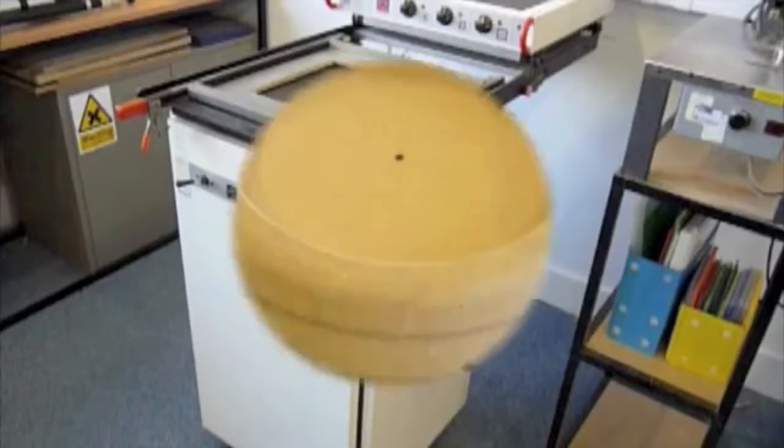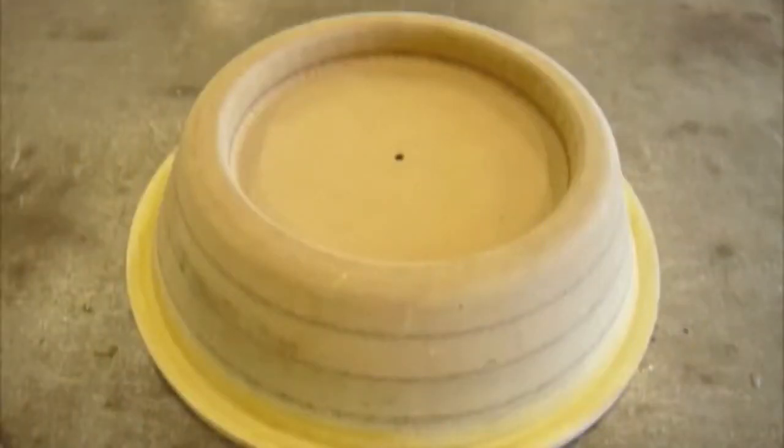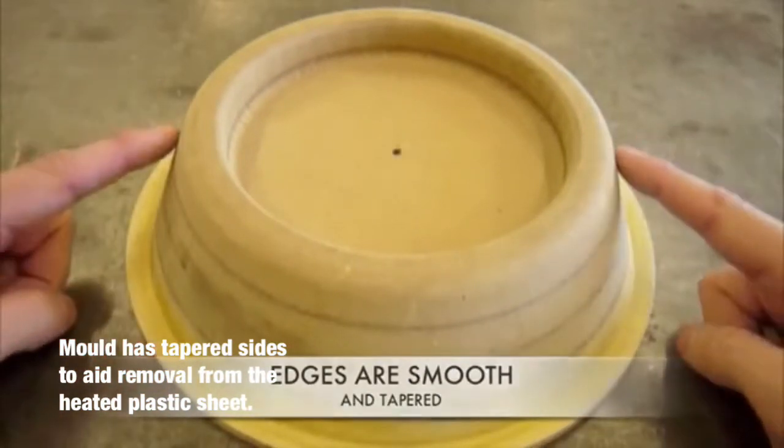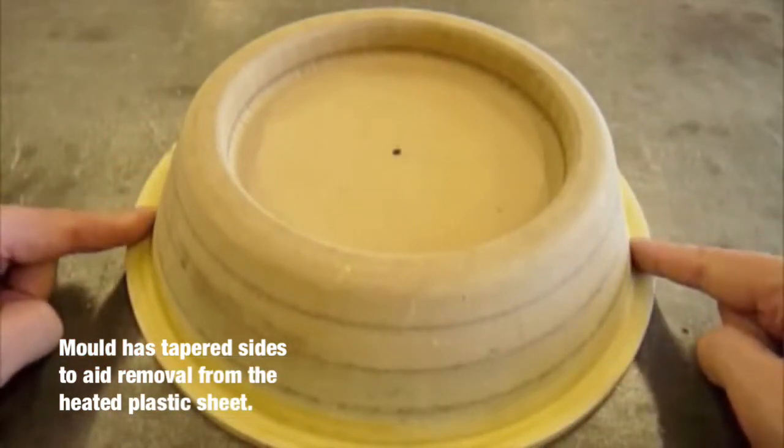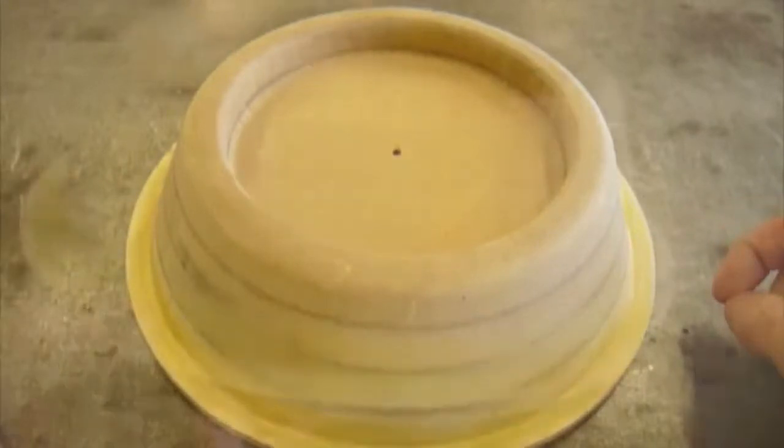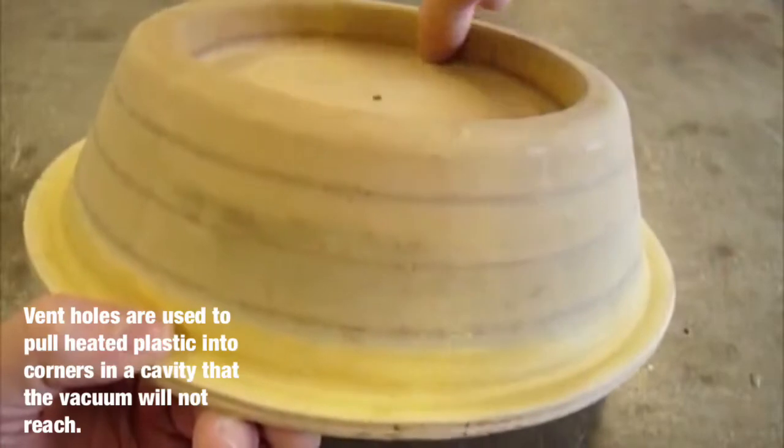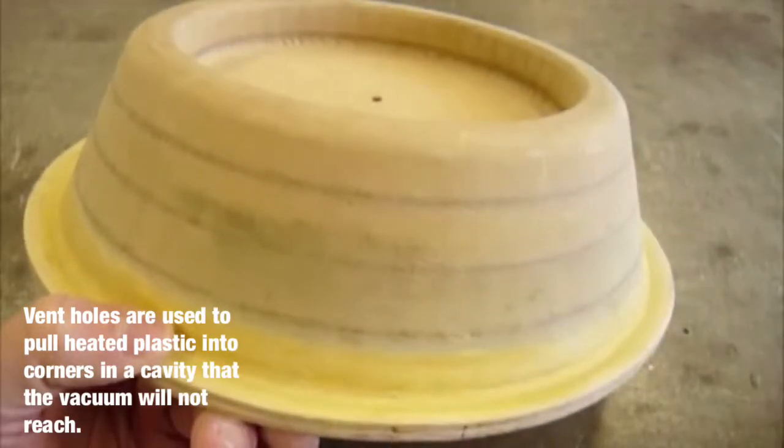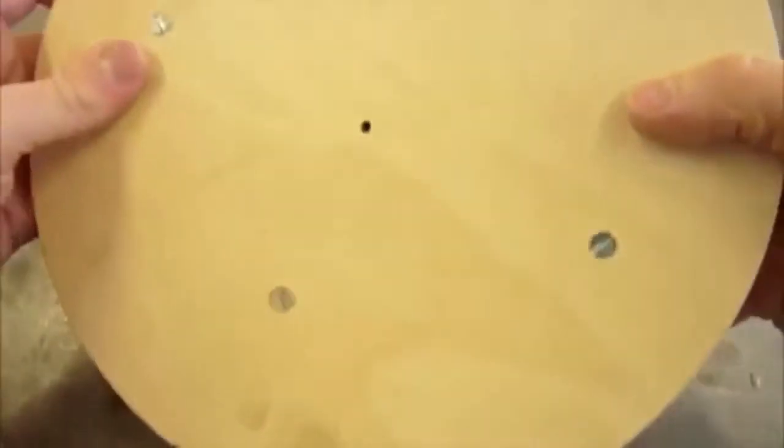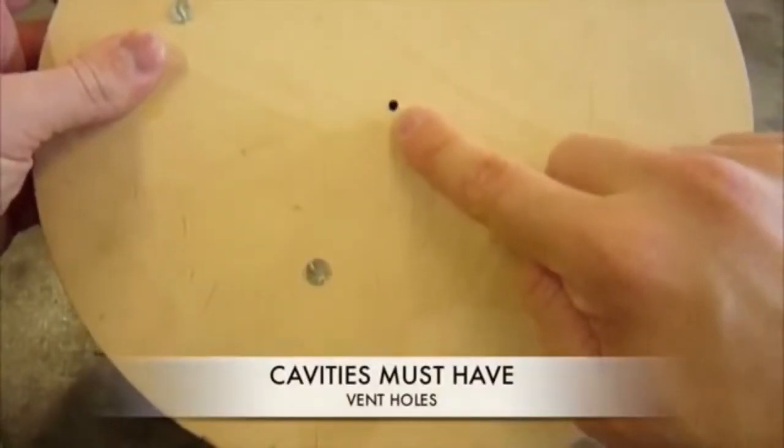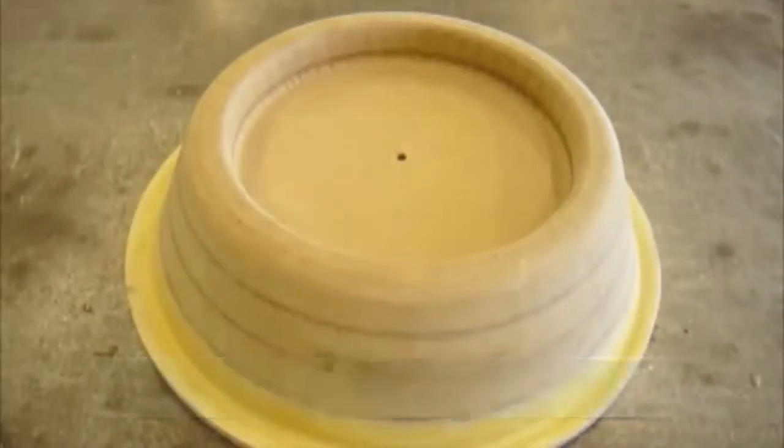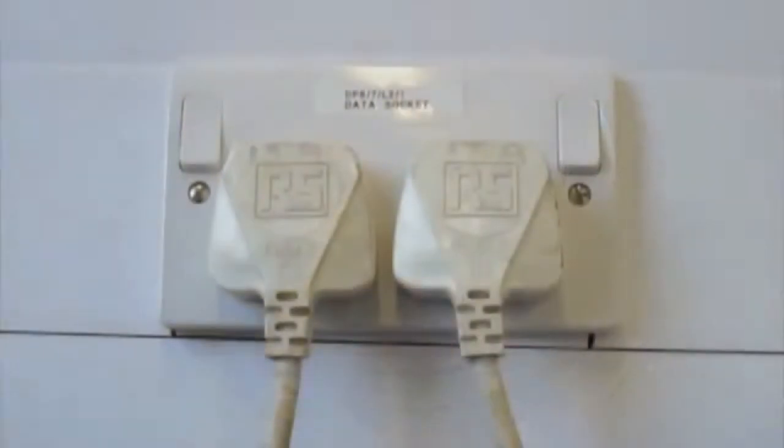To begin the process, you must first make sure the mold is finished properly. This means all the edges are smooth and rounded and the sides are tapered, meaning angled at at least 5 degrees. This is to ensure the mold can be released from underneath the plastic after forming. Additionally, if there are any cavities in the mold, like in this example, a small hole must be drilled from the cavity to the bottom of the mold. These are called vent holes. They are used to help pull the last of the plastic sheet into corners where the original vacuum will not reach. You are now ready to vacuum form.